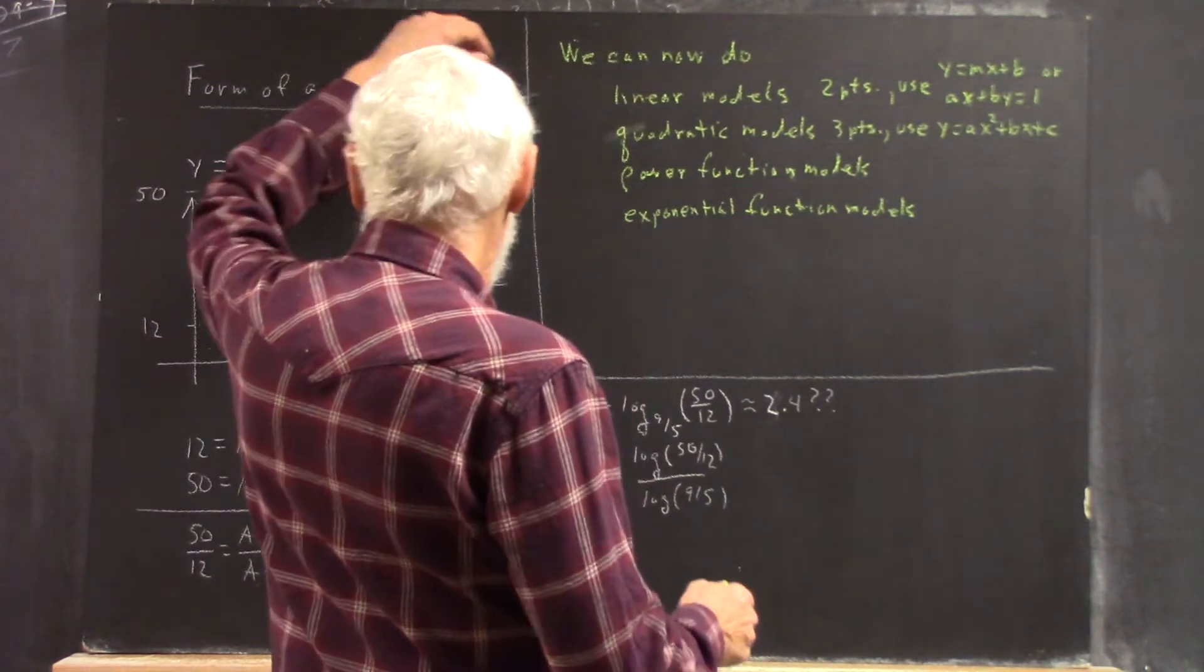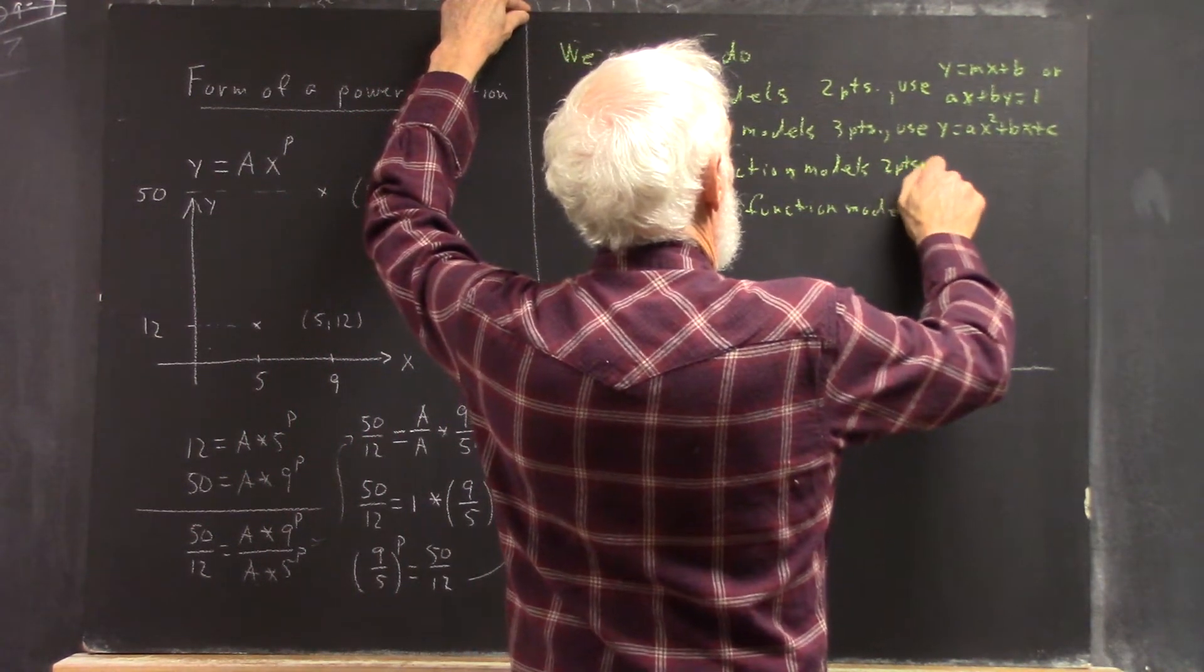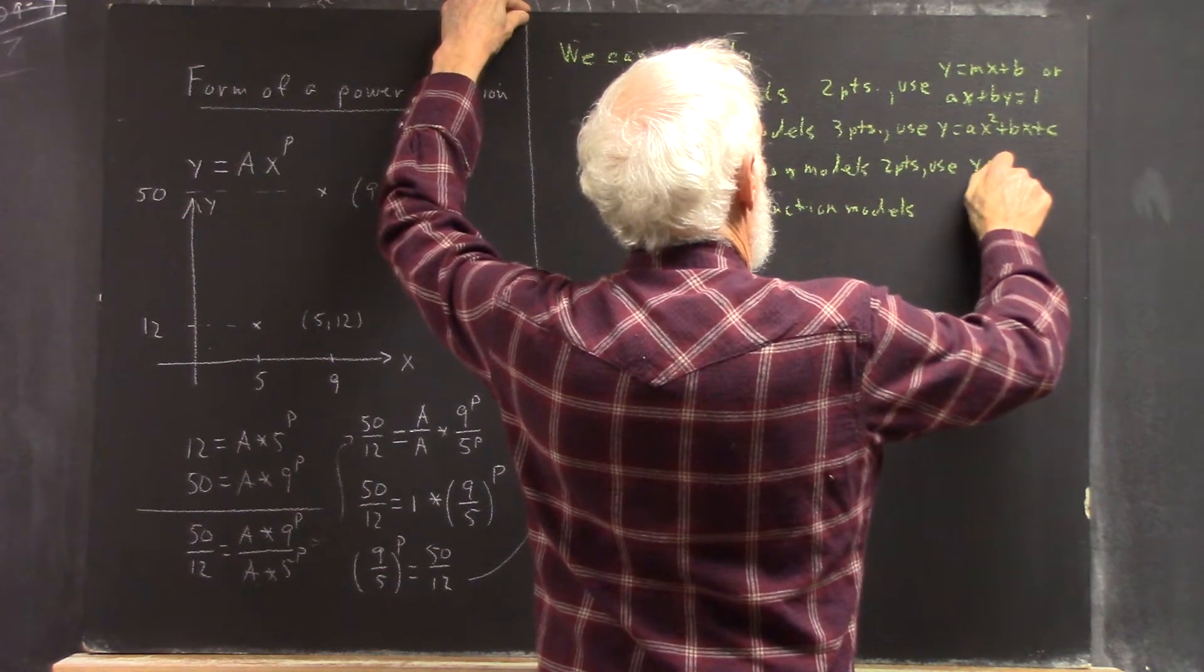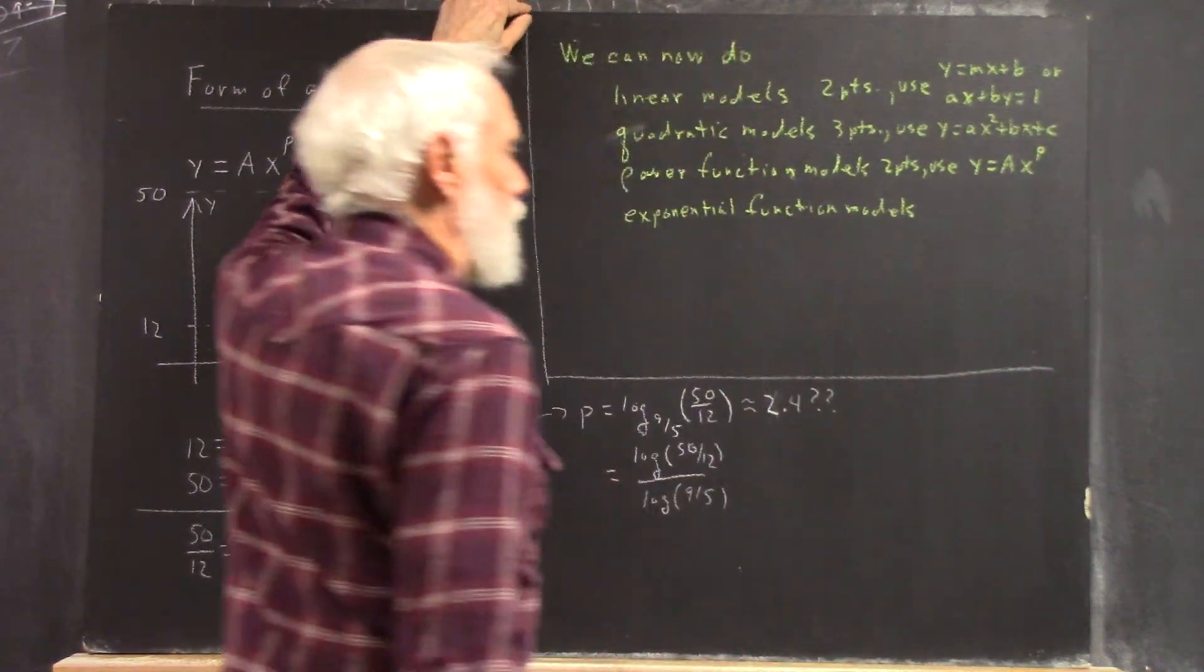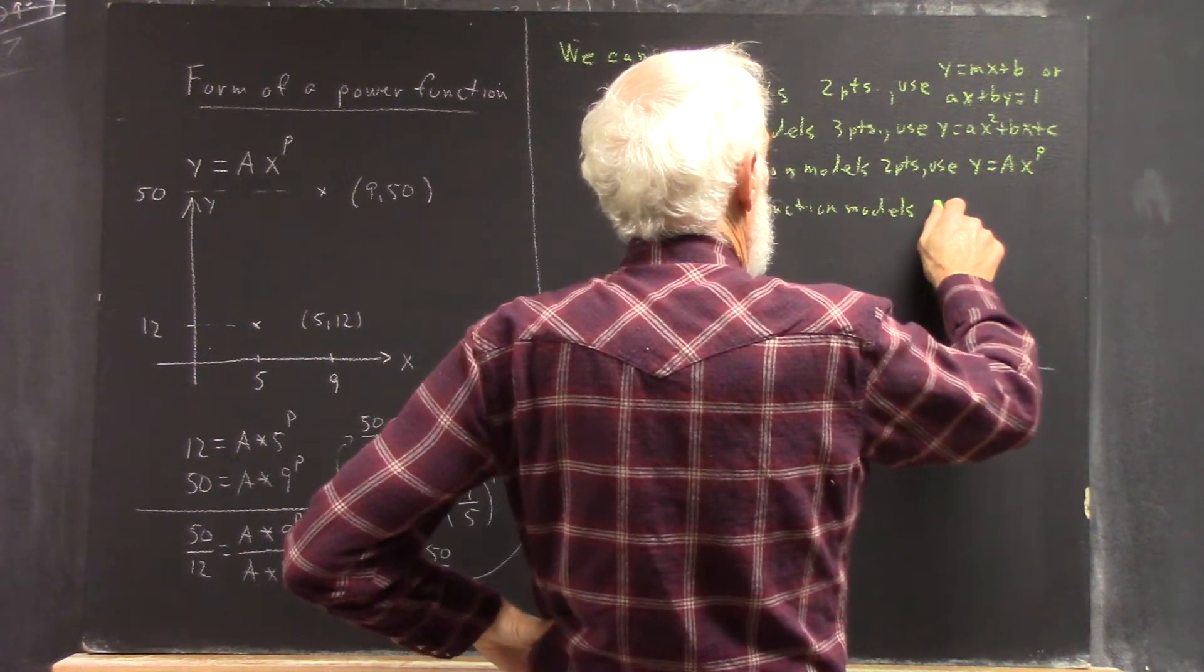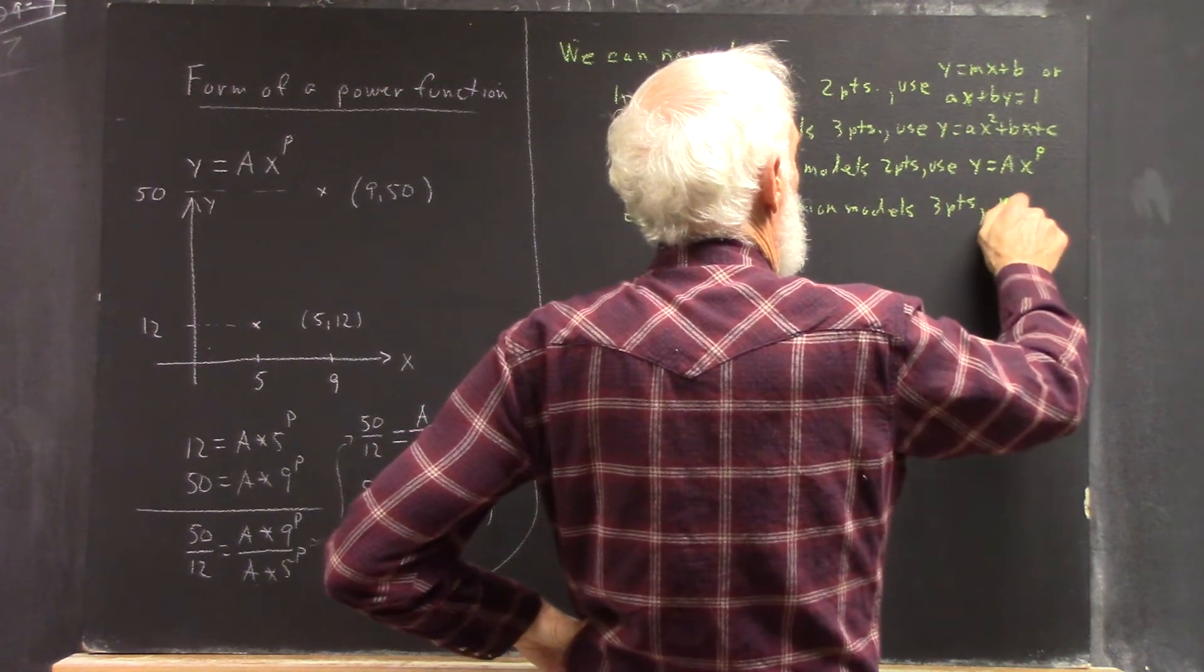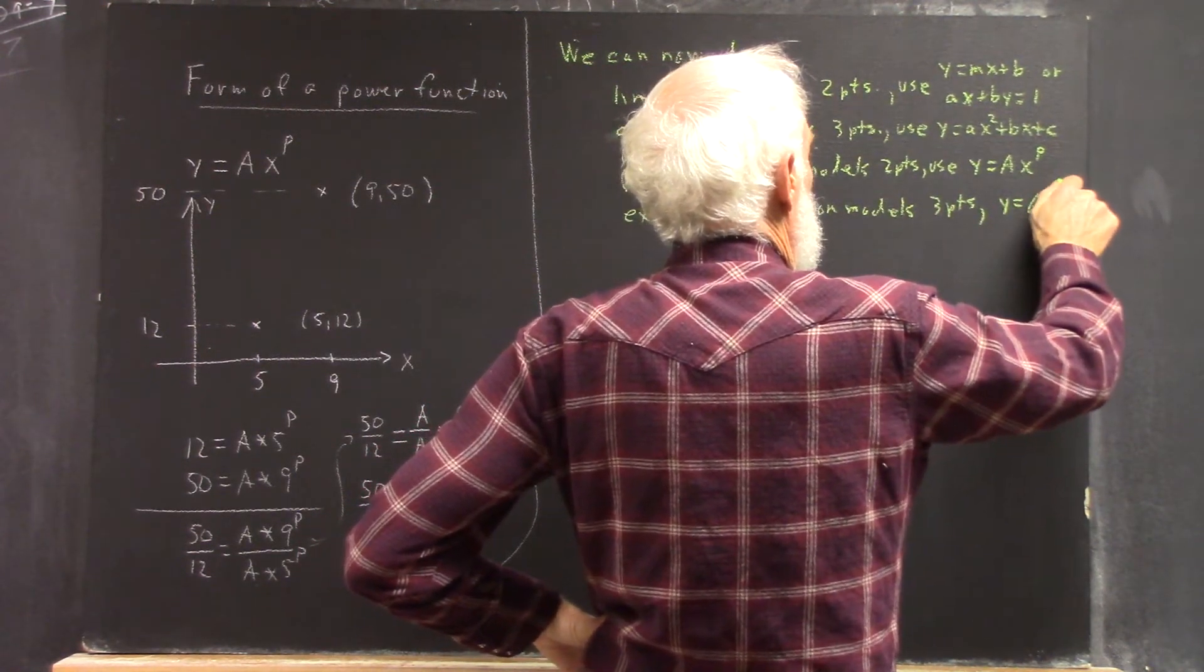Power function models, we need two points. And we use y equals ax to the p. Exponential function models, three points. y equals a times b to the x.